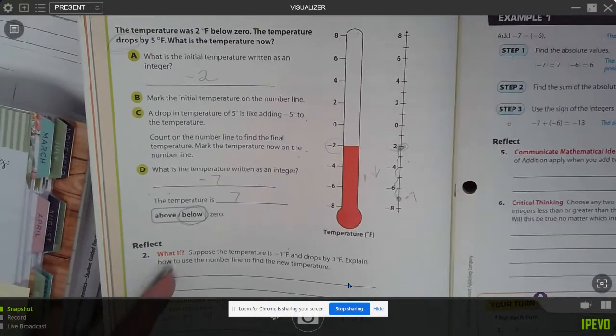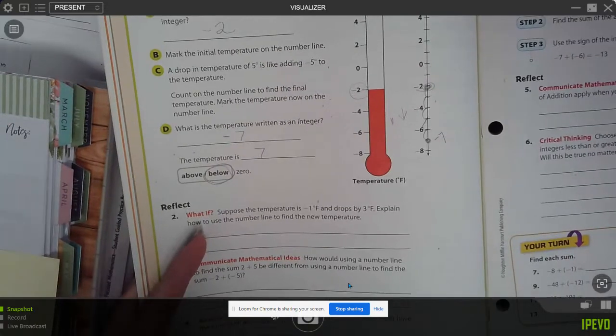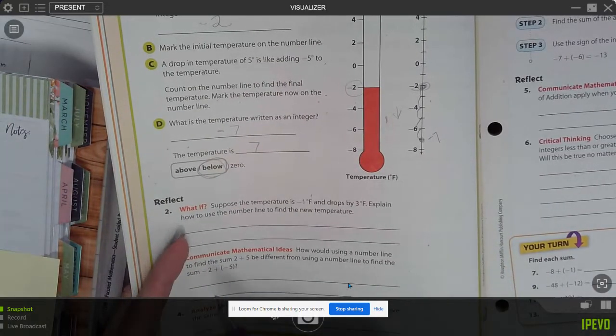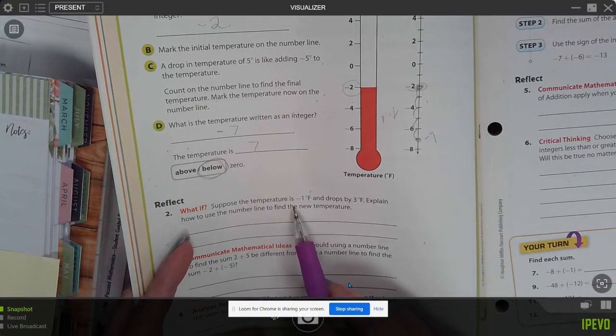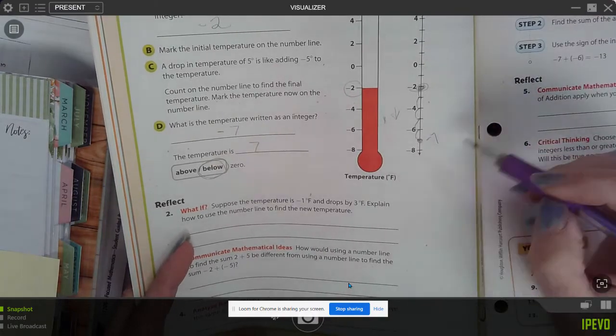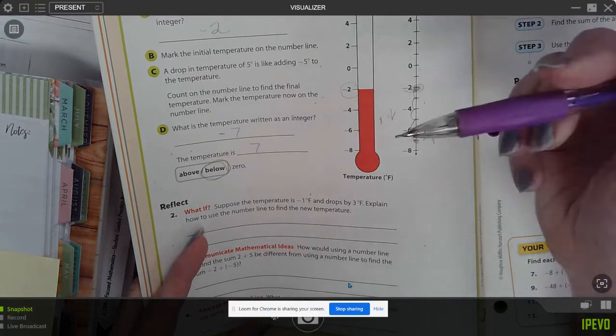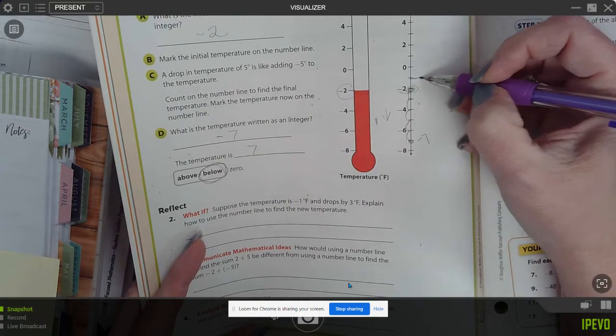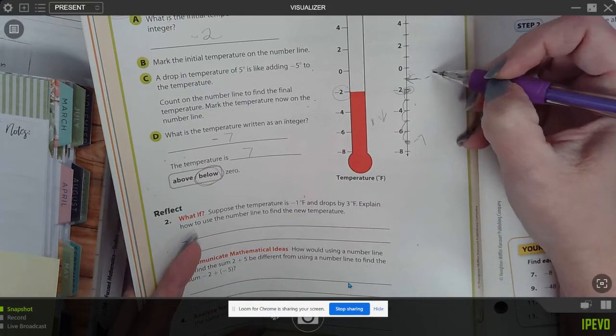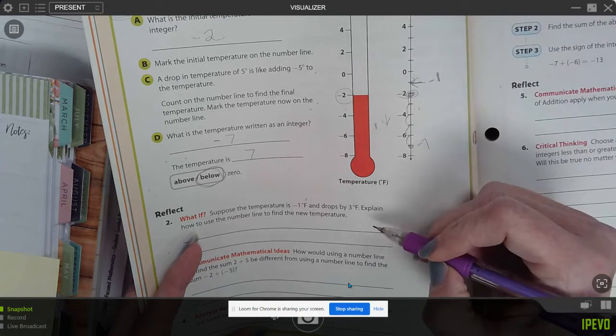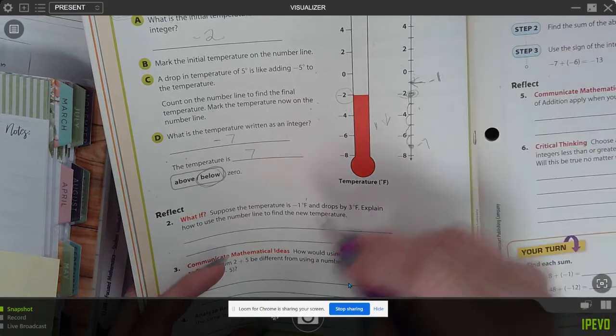All right, let's get this to see the rest of it. What if suppose the temperature is negative one and drops by three? I'm going to try to get a different color. So if it was negative one, and it drops by three, so how would that be different?